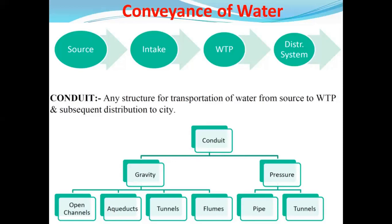We know that water always flows from higher head to lower head. So it may flow by gravity or under pressure. If the source of water is at a higher elevation and we have to distribute water at a lower elevation, then water can flow by gravity.